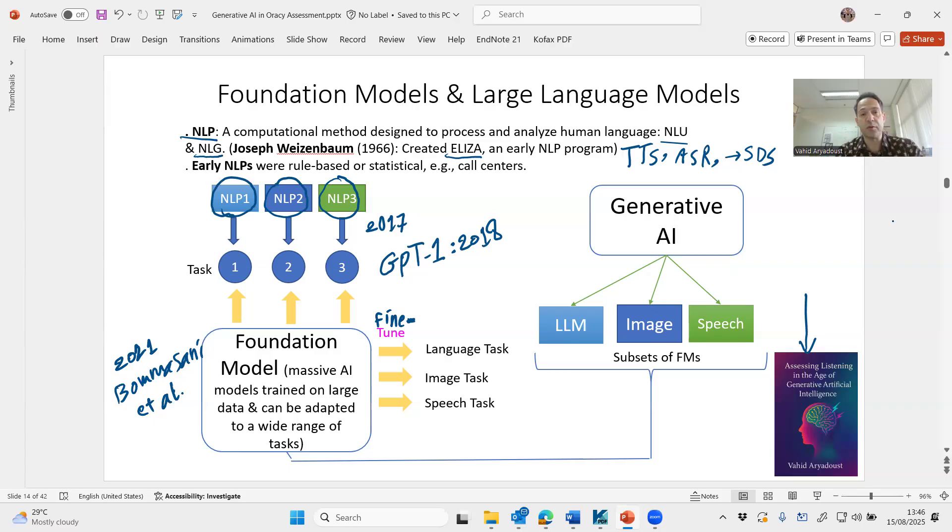For example, chat GPT 3.5 was able to do only language specific tasks. So we refer to these as large language models. In other words, a large language model is a foundation model or an AI model that has been specifically trained and fine tuned to do language related tasks. But foundation models can also be tuned to do other things, such as image processing or image generation or speech related tasks. And this will be another ability of these models.